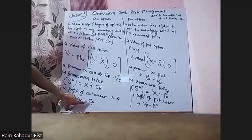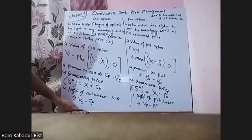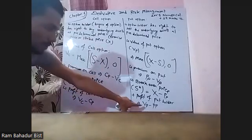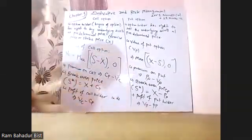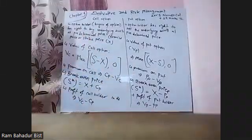BC minus CP divided by CP into 100. PP minus PP divided by PP into 100 percent.